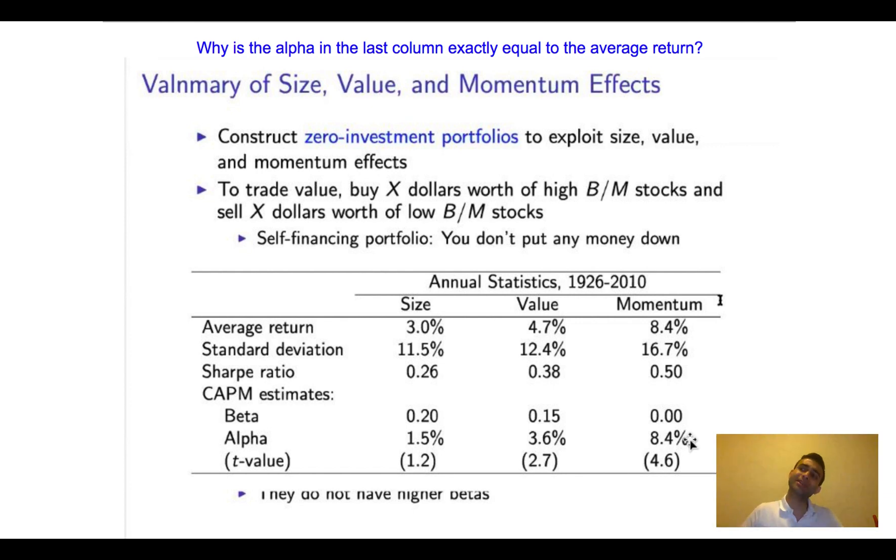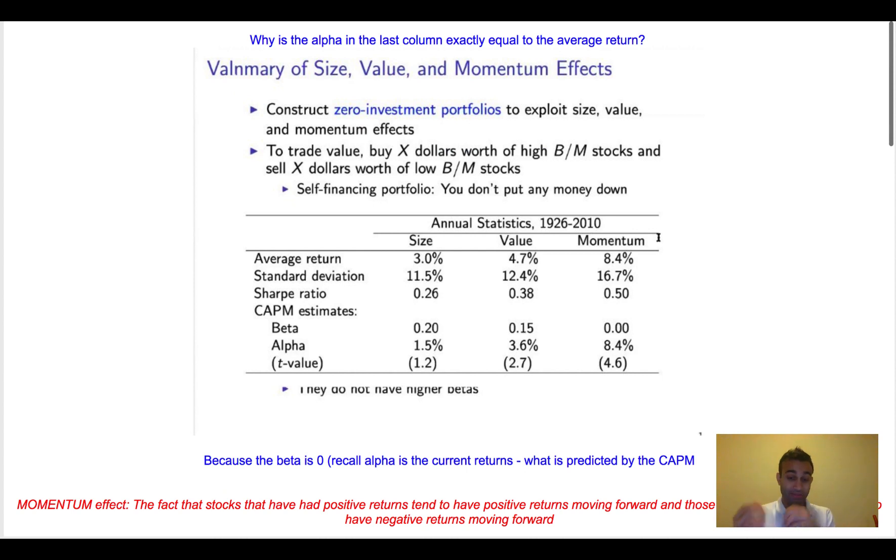I'm not asking you how you get to those numbers. I'm asking you, why are they the same? And by going through this, I'm like, what does alpha mean again? What does average return mean again? Why do those two have to be the same?